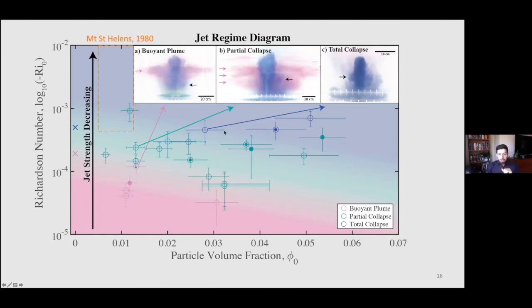Another big result: as we vary source conditions for our jets in the lab, they transition among these regimes smoothly. If we vary source conditions by a little bit, the behavior shifts a little bit towards the partial collapse regime. That's important because classic models assume an abrupt transition between buoyant plume and total collapse, whereas we're arguing this is actually a continuous transition during an eruption.